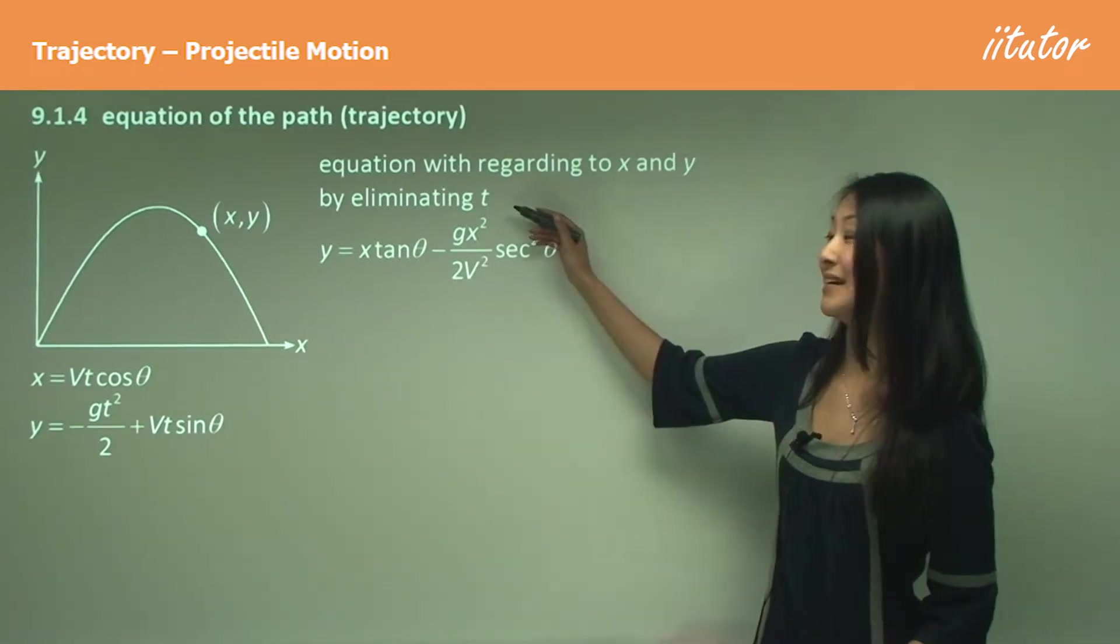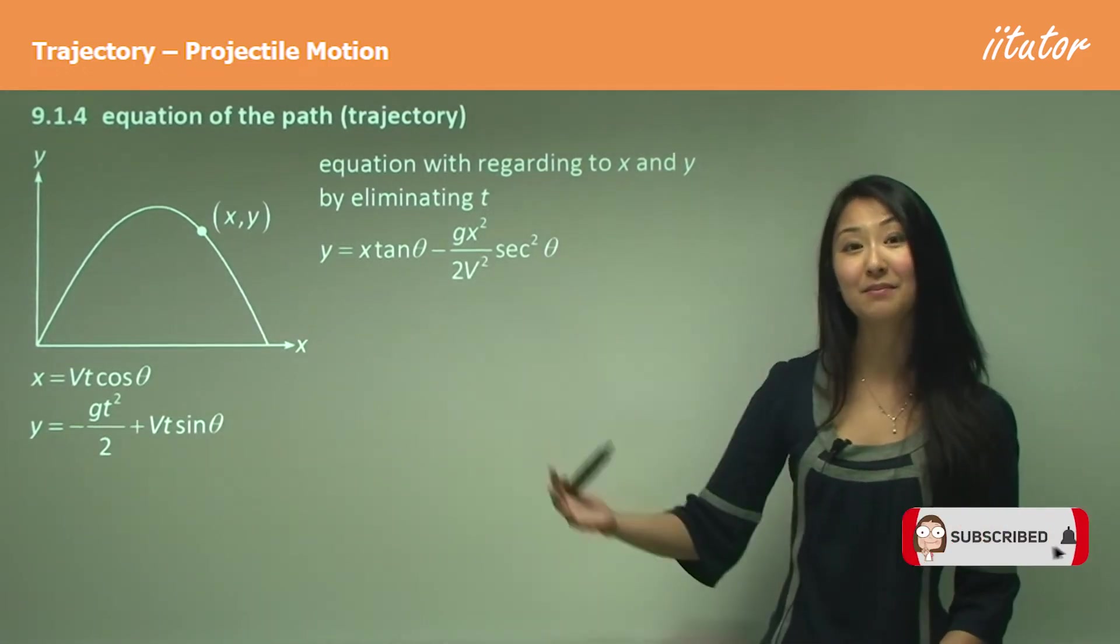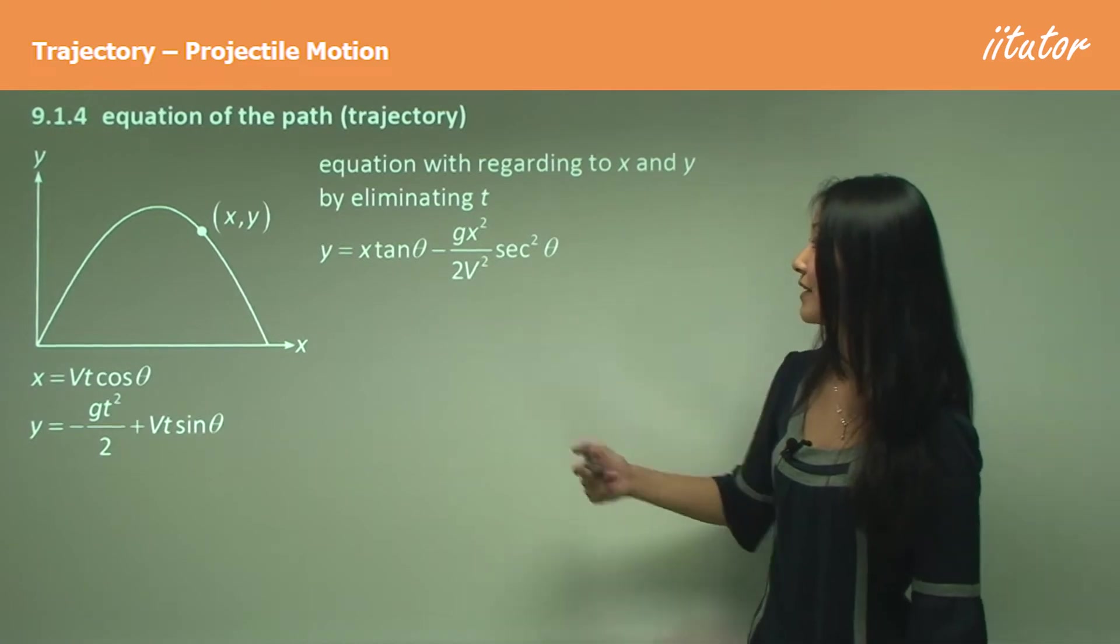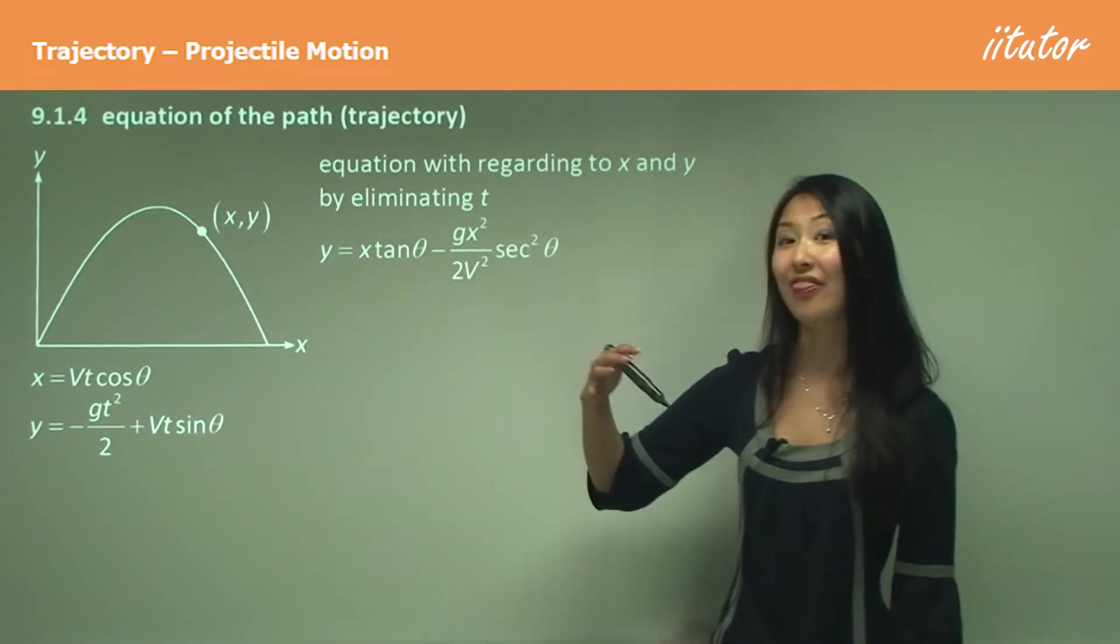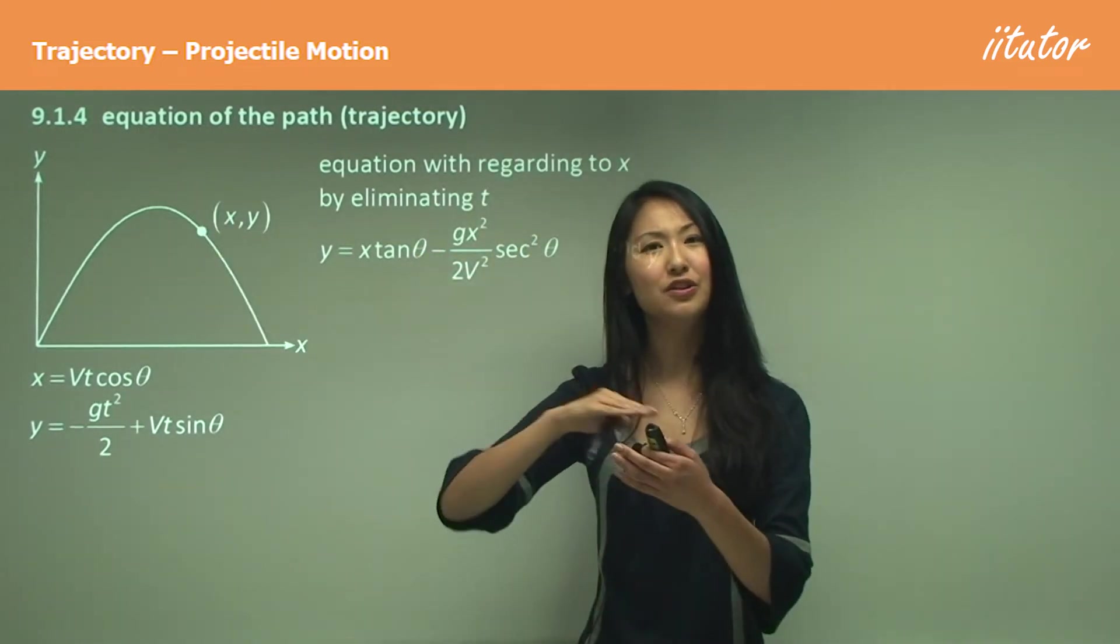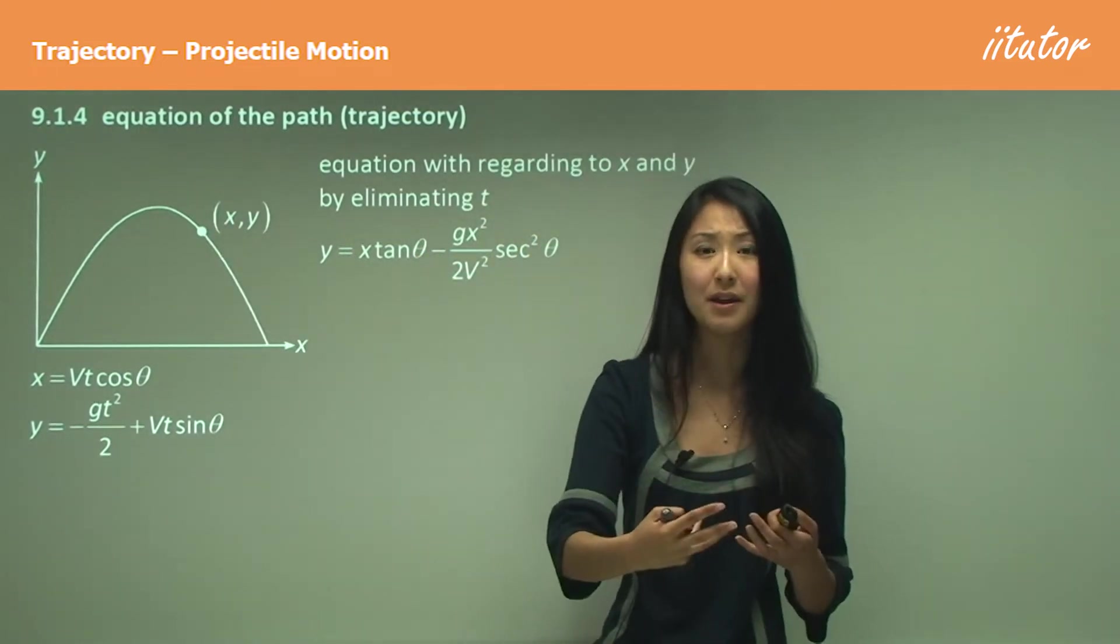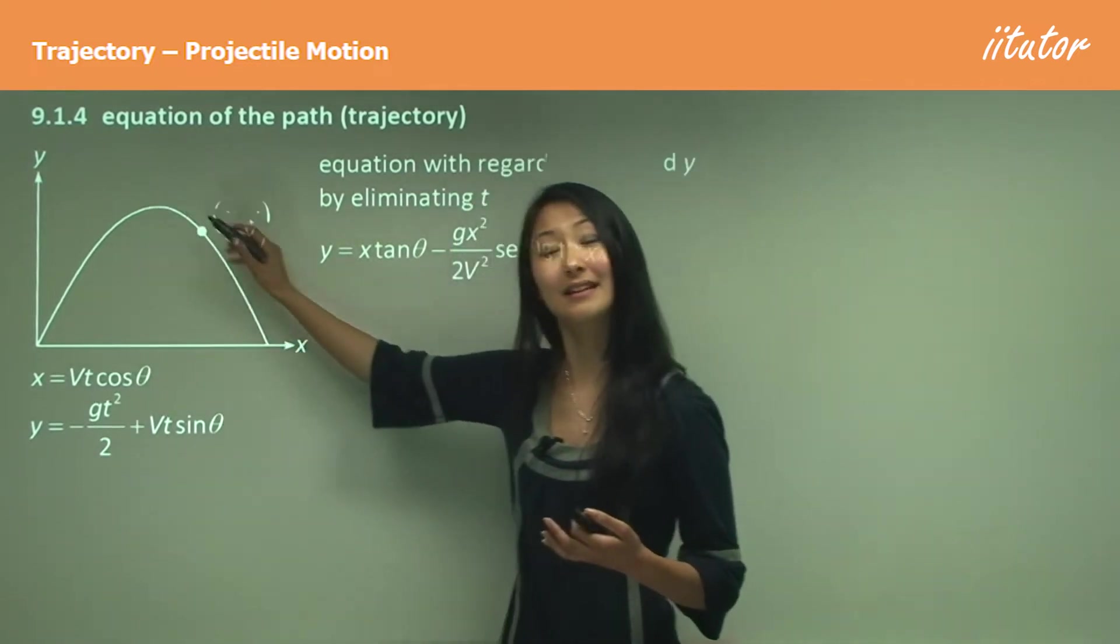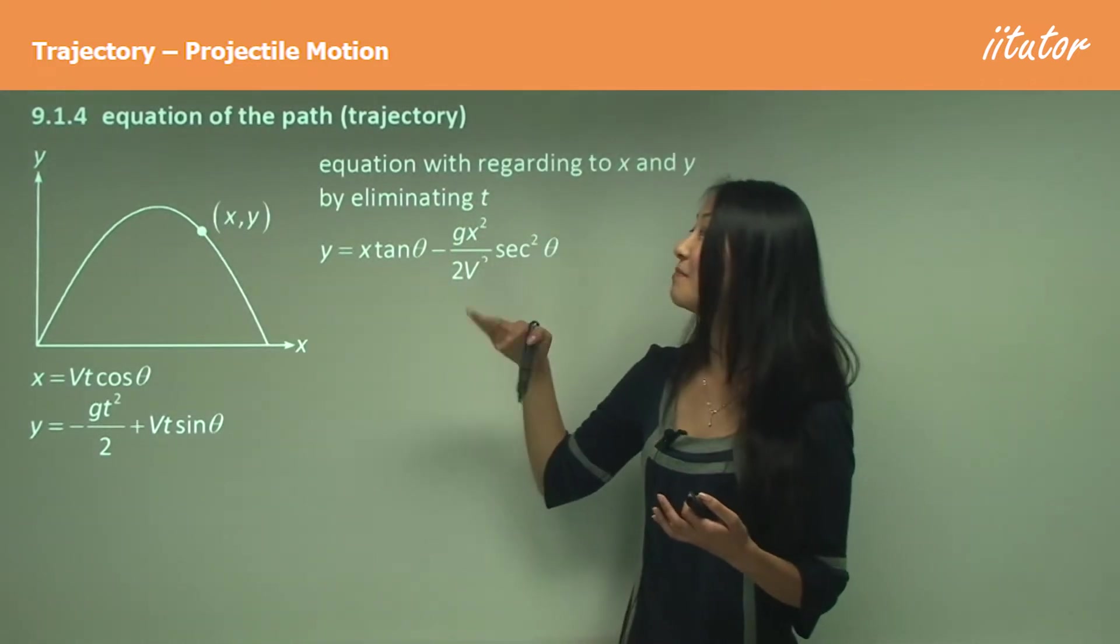And how we do that is we want to eliminate t. By eliminating t we get this equation where there's only x and y, and that gives us the equation of the path where it has no relation to time, it's just the path it's taking. I know this looks a bit complicated.